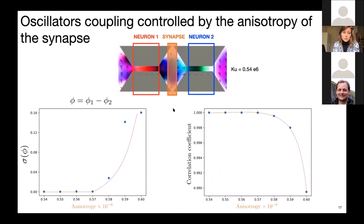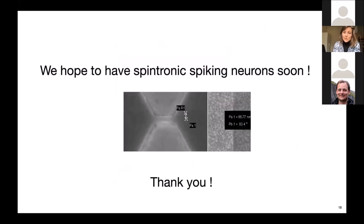So we could try to quantify this coupling as a function of anisotropy by plotting the standard deviation of the phase difference between the two neurons. And we see that the coupling breaks when we change the anisotropy by about 10%. And alternatively, we could look into the correlation coefficient between the TMRs of the two neurons, and we obtain the same result. We see that the coupling breaks at about 10% change in the anisotropy. So yes, we have shown that in principle we could obtain spiking neurons using these easy plane spin hole nano oscillators, and we have started fabricating the samples. So I hope we'll have some experimental results soon. Thank you.